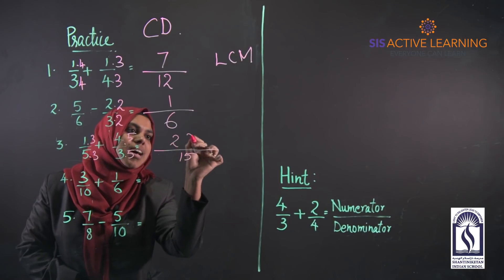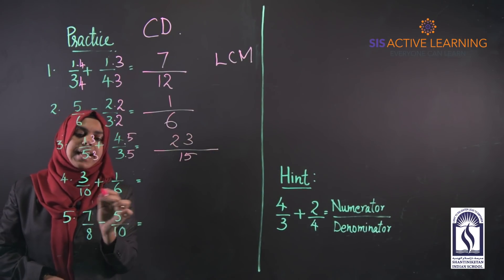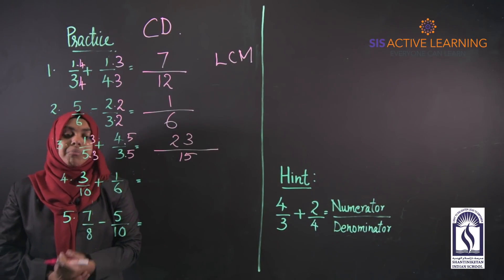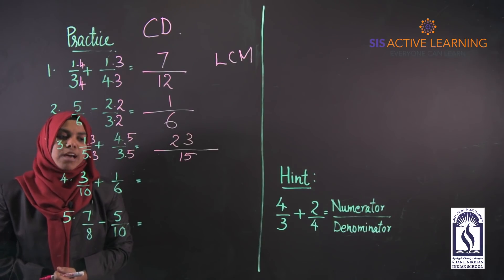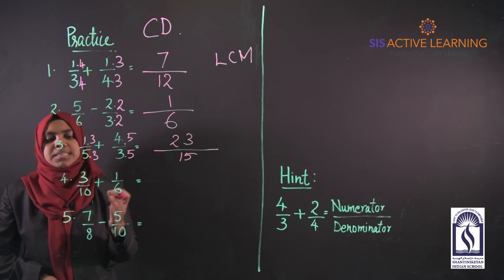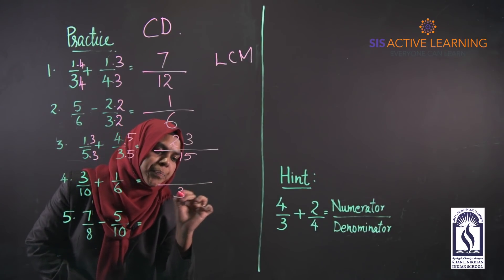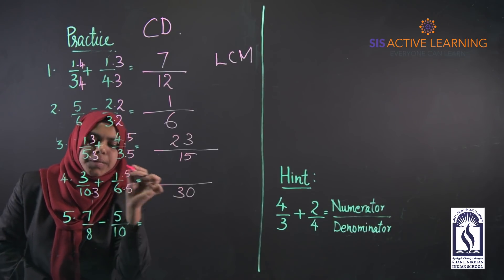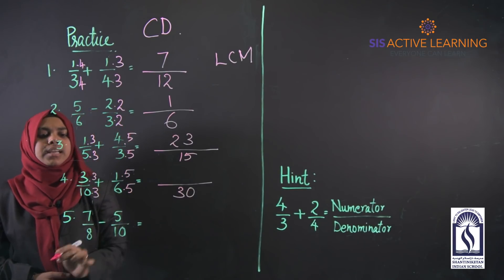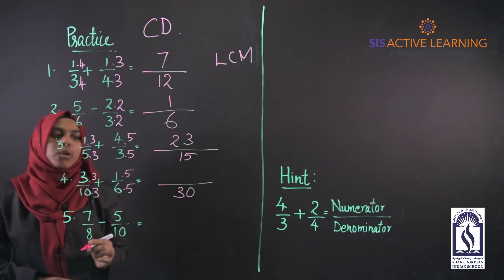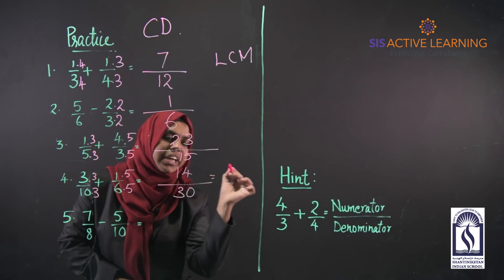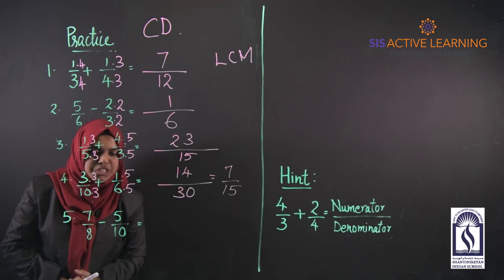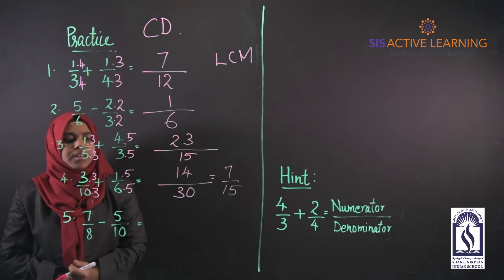Now we have denominators 6 and 10. Even though both are multiples of 2, 10 is not a multiple of 6, so we must take the least common multiple. The LCM of 6 and 10 is 30 — 6 × 5 = 30 and 10 × 3 = 30. The numerator becomes 3 × 3 = 9 plus 5 = 14, giving 14/30, which simplifies to 7/15.